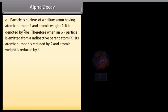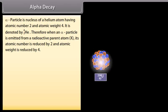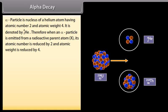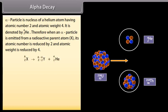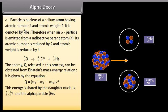Alpha decay: Alpha particle is nucleus of a helium atom, atomic number 2 and atomic weight 4. It is denoted by the symbol shown. Therefore, when an alpha particle is emitted from a radioactive parent atom X, its atomic number is reduced by 2 and atomic weight is reduced by 4. It can be demonstrated as shown. The energy Q released in this process can be obtained from Einstein's mass-energy relation. It is given by the equation Q is equal to MX minus MY minus M He into C squared. This energy is shared by the daughter nucleus and the alpha particle.